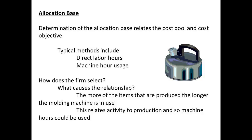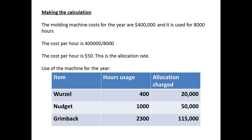The firm needs to select an allocation base. There are two common methods: they relate to the use of direct labor hours, or the use of machine hours. The relationship should be selected on what is termed a cause and effect basis. The greater the activity of the molding machine, the greater is the cost, since the machine will be in use for longer. Machine hours would be a useful allocation basis in this case. The firm discovers that the total cost of the machine use is $400,000 for the year, and that it is used for 8,000 hours. Dividing cost by hours, we get an allocation cost of $50 per hour. This is the allocation rate.